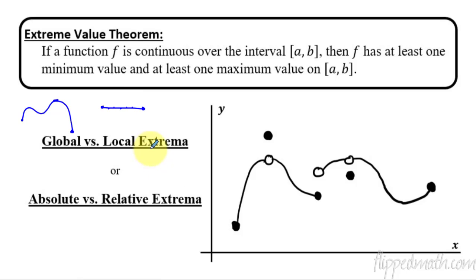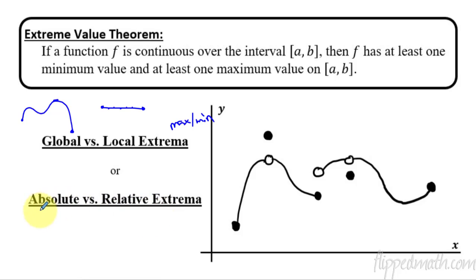Now let's talk about global and local extrema. Extrema is a fancy word for just talking about a max or a min. You'll see in some textbooks it says global or local, and some teachers will use absolute or relative extrema. It depends on your teacher and textbook. I'm going to be using absolute and relative. Global and absolute mean exactly the same thing; local and relative mean exactly the same thing.